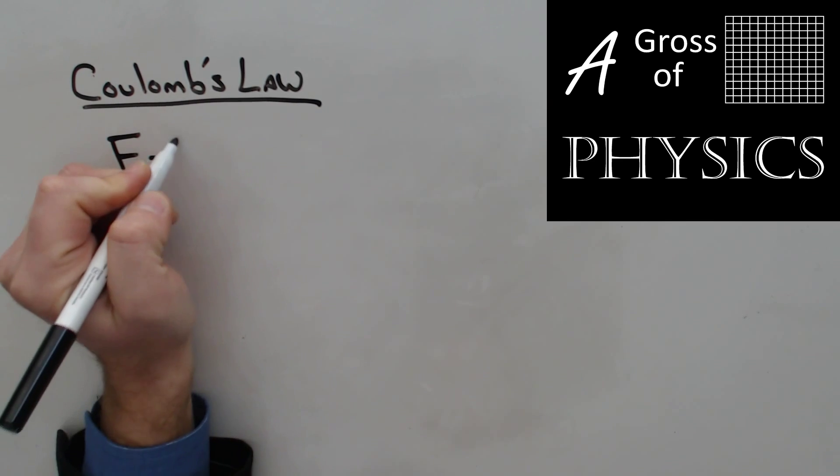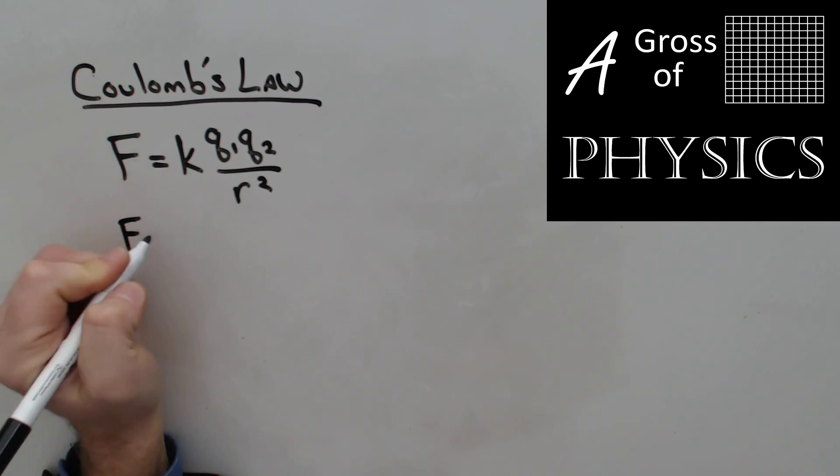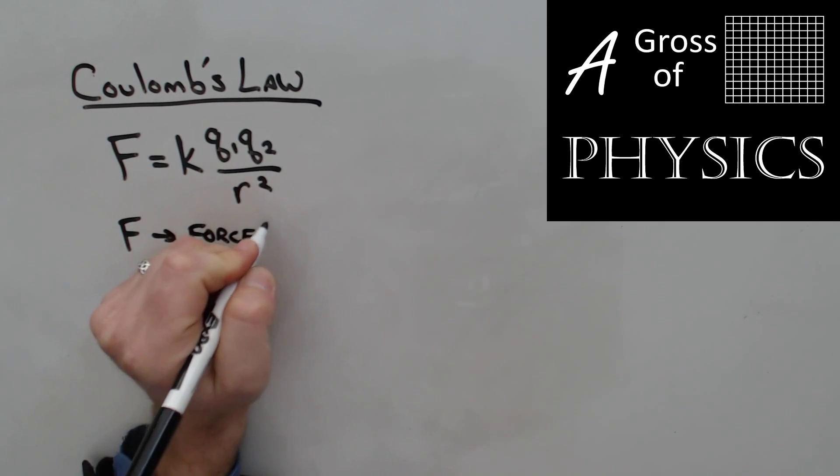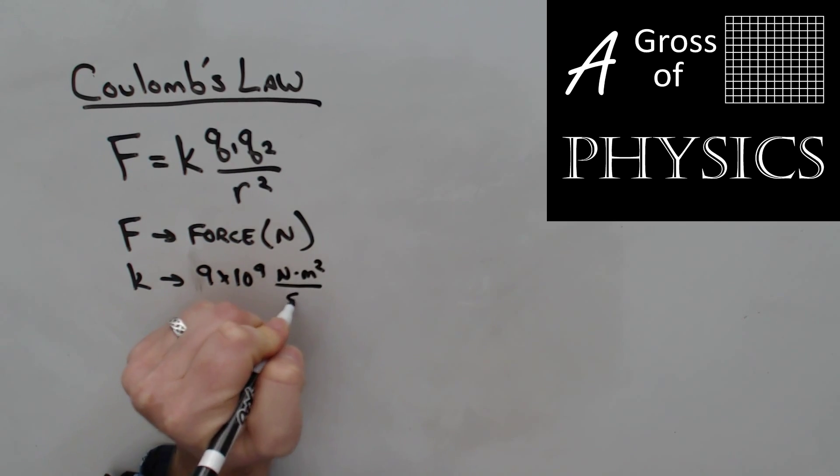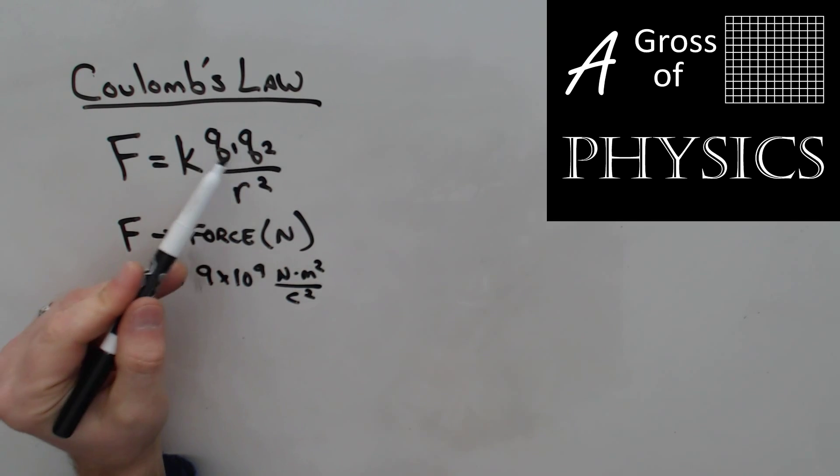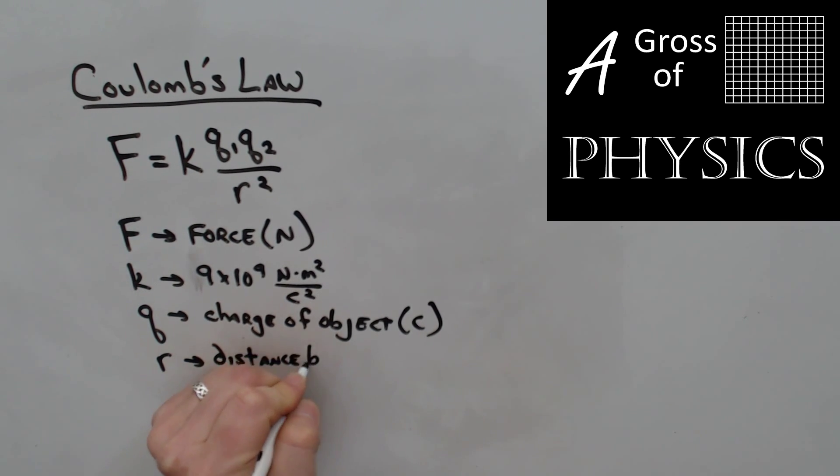The formula is F equals k q1 q2 over r squared. F is the electrostatic force, and that's going to be in newtons. K is the electrostatic constant, and it's 9 times 10 to the 9 newton times meters squared over coulombs squared. That allows us to cancel out the two coulombs on the top and the two meters on the bottom. Q is the charge of each object, measured in coulombs. So 1 and 2 each object. And then r is the distance between the objects, and we're going to measure that in meters.